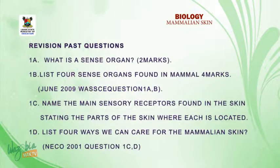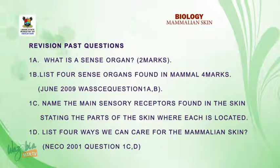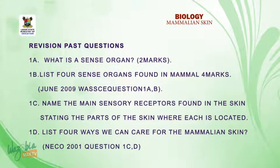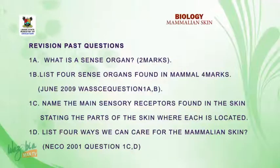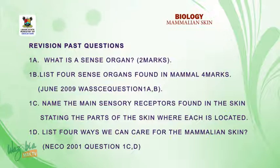Let's quickly look at past questions that have been asked on this topic. Question one: What is a sense organ? A sense organ is an organ made up of a group of specialized cells which is able to receive, detect, and transmit stimuli as impulses to the nervous system. Another question: List four sense organs found in mammals. The answers are: mammalian skin, eye, ear, nose, and tongue.